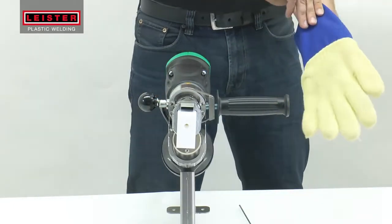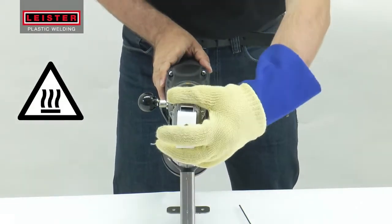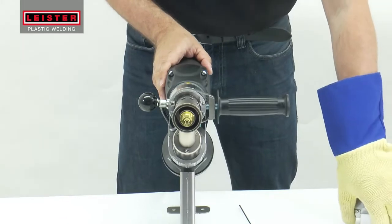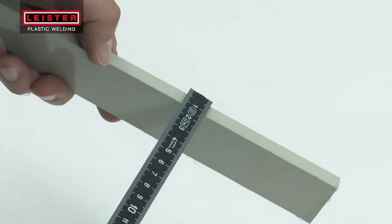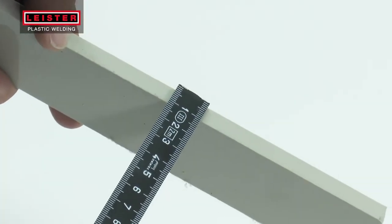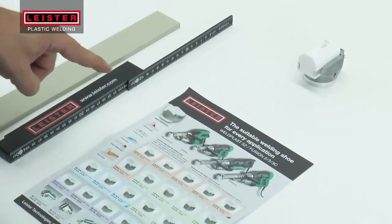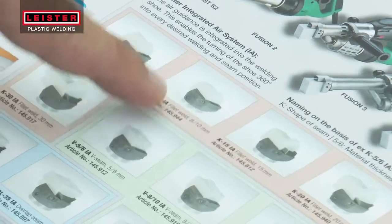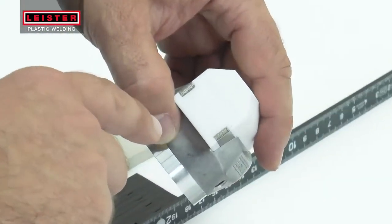Following a brief warm-up period, remove the blank welding shoe after the welder has reached operating temperature. Based on the thickness of the material to be welded and the required weld geometry, select the correct welding shoe. The code located on the bottom of the shoe indicates the geometry of the weld and the base material thickness.